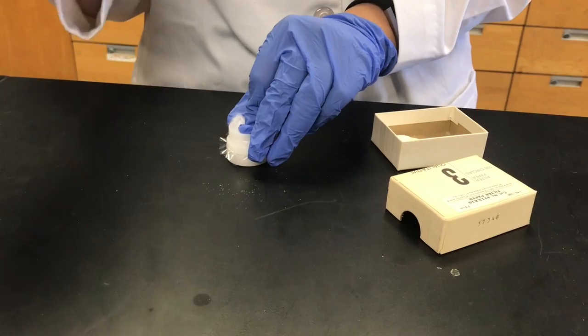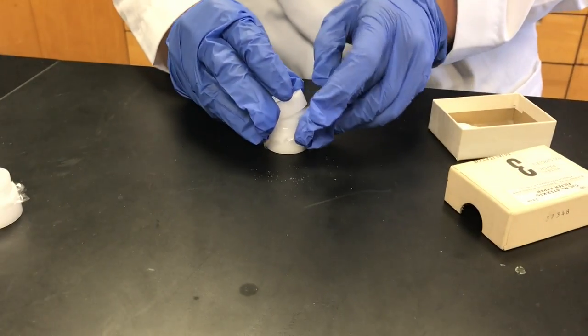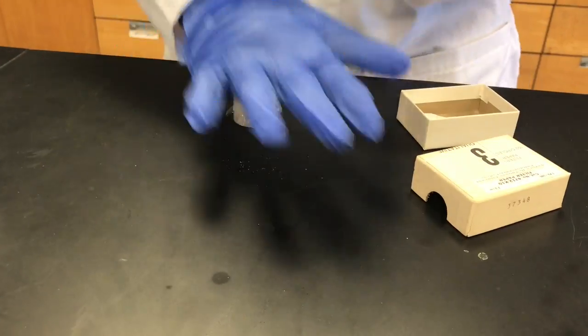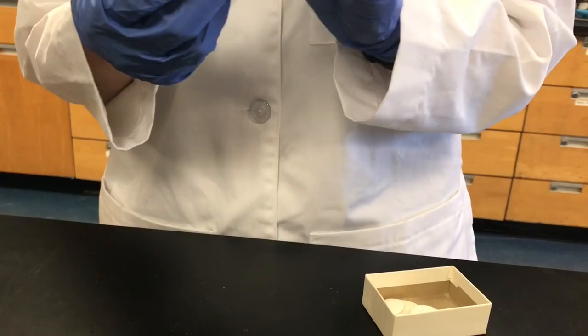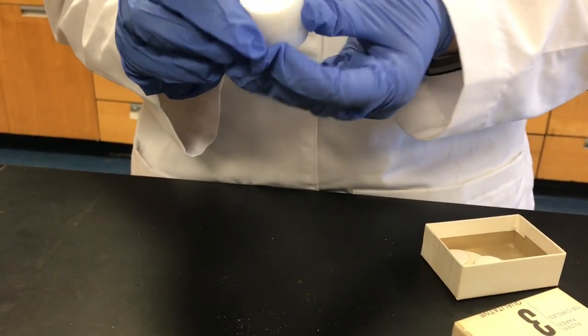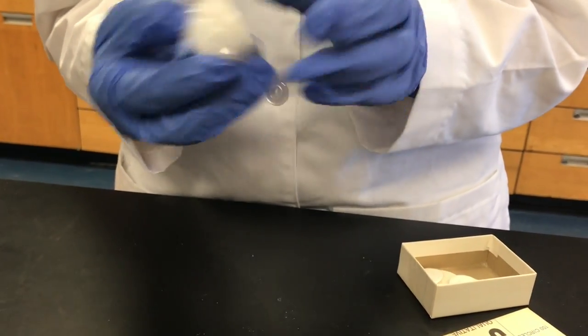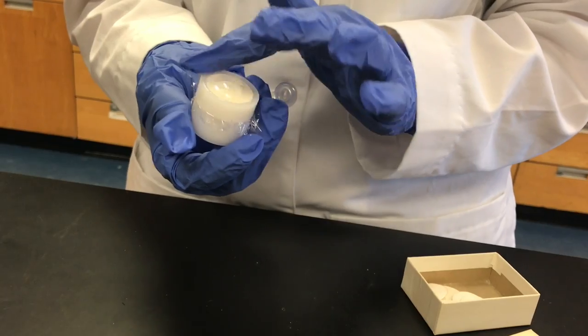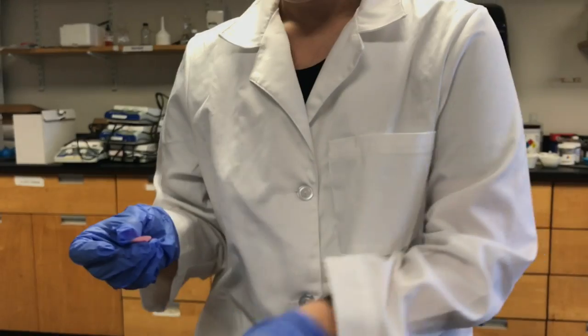Okay, and now we're going to put this closed top on. So this is the side that your sample's on, and then this is the closed side. But when you put it in the machine, you're going to want to put it with the sample side down.